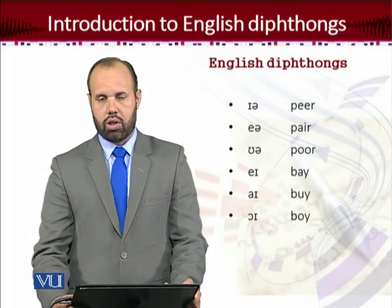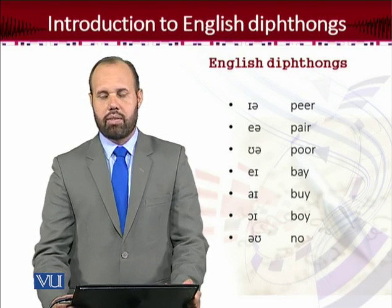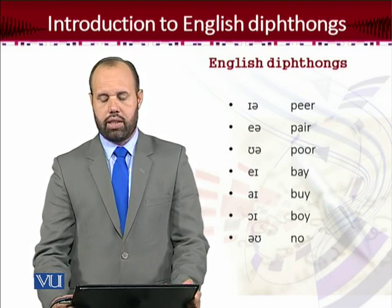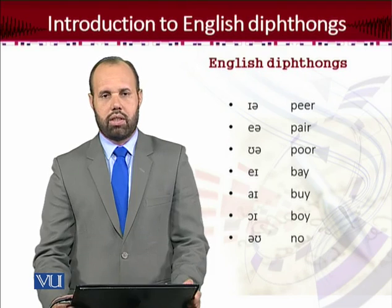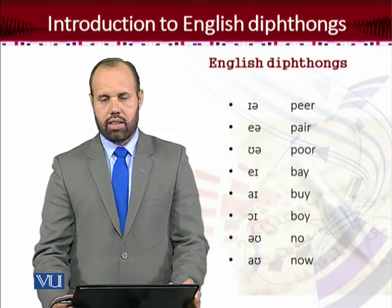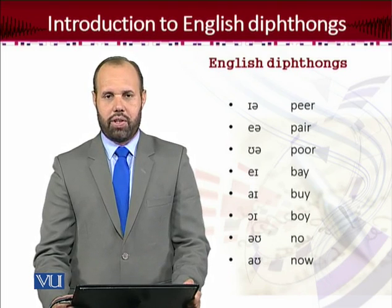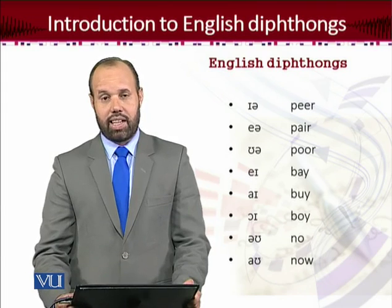There are also two more diphthongs — closing diphthongs that end with the /ʊ/ sound. The first starts with schwa and ends with /ʊ/, as in words like 'no,' 'so,' or 'row.' The last diphthong starts with /a/ and ends with /ʊ/, in words like 'now.' So these are all eight English diphthongs.